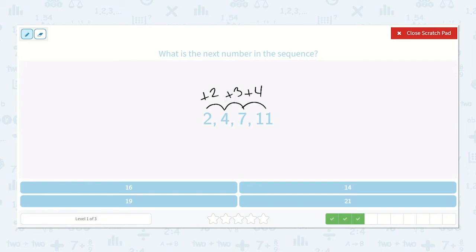So we have plus 2, plus 3, plus 4, next would be plus 5. So 11 plus 5, I know 10 plus 5 is 15, so 11 plus 5 is 16, because there's one more. So 16 was our missing number.